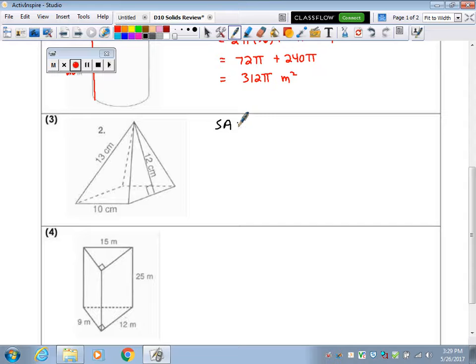So, on our study card, in my class, what we have written down is that you have four triangles, plus the base. Okay? The base area, even though it's not labeled, the base of this pyramid is a square. So the base is 10 times 10.